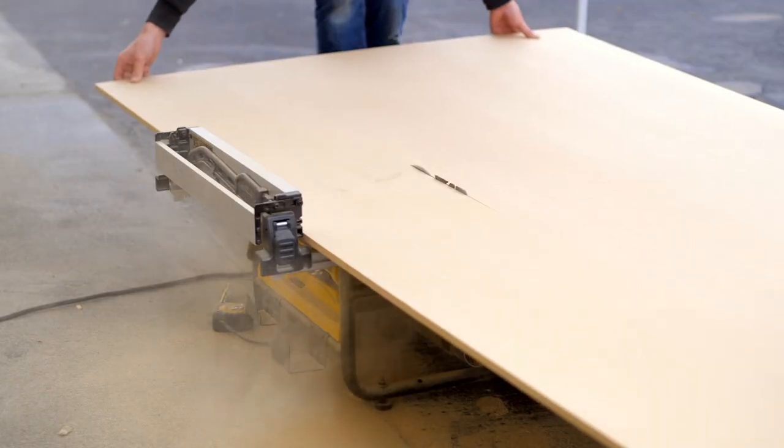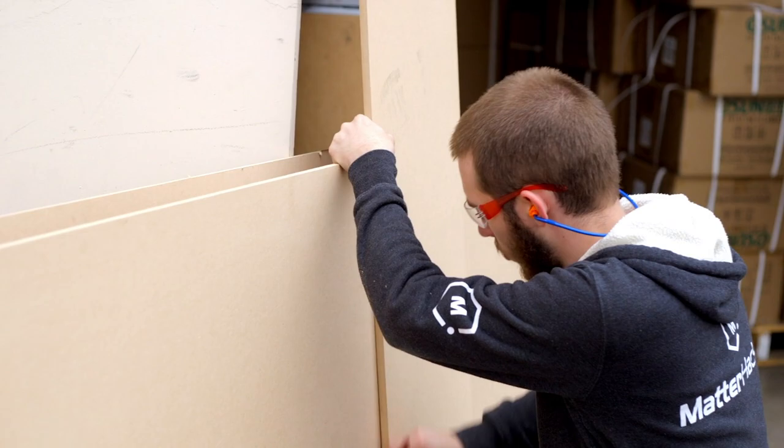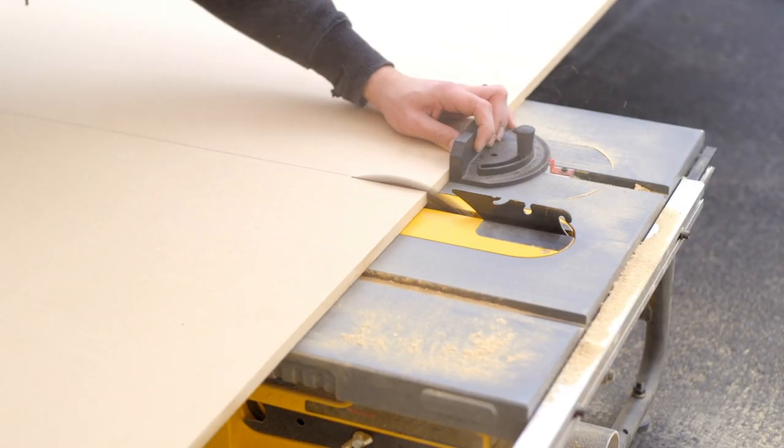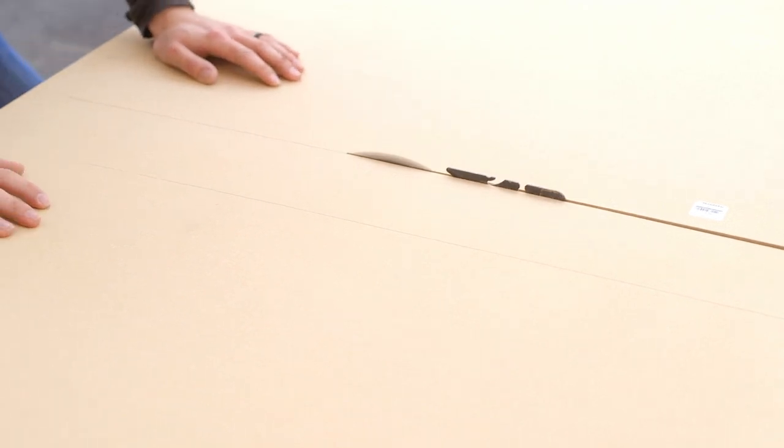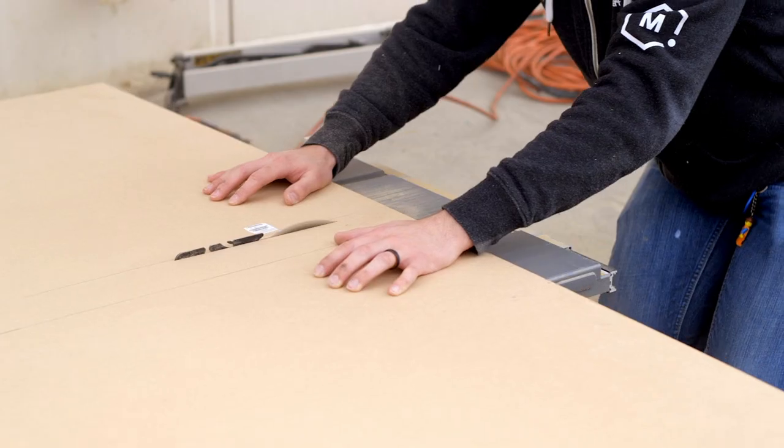From there, I took the sheets of MDF we got from the hardware store and cut them down on the table saw using a couple different pieces because this is a job site saw and not a cabinet saw. So it's a lot smaller, and I had to do a little bit of working and help to get all these pieces cut out.